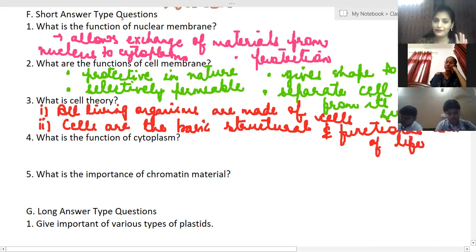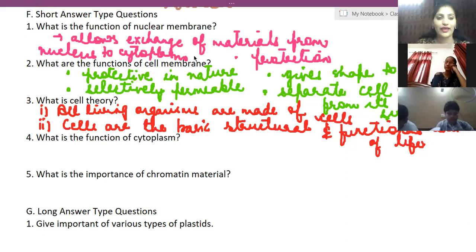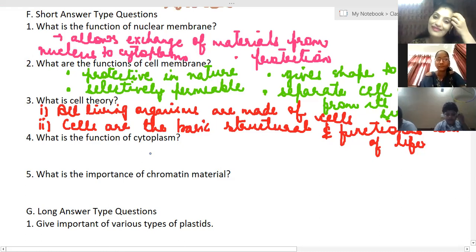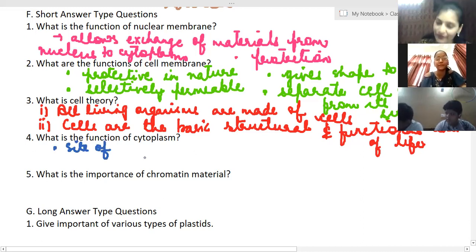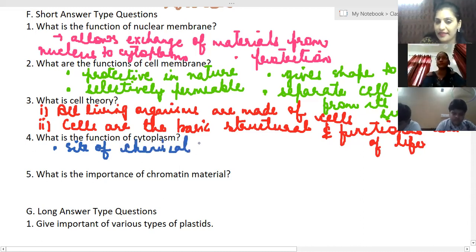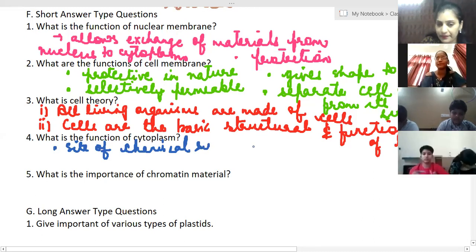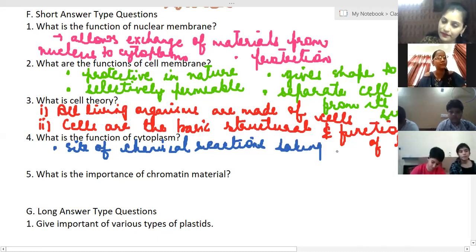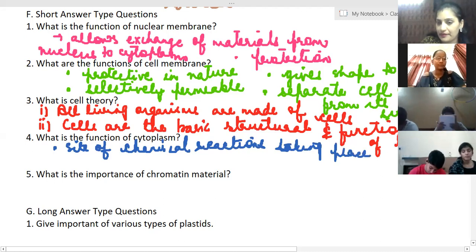Now let's go to the fourth question, which is what is the function of cytoplasm? Who is telling me what is the function of cytoplasm? It is the site of chemical reactions. Yes, it is the site of many types of chemical reactions. So first, we can write: it is the site of chemical reactions taking place inside the cell.